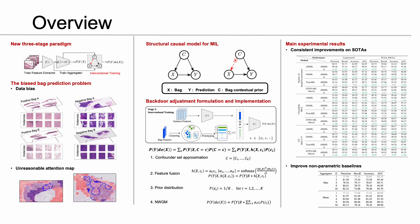Here is a quick review. We present a new three-stage paradigm for multi-instance learning. We try to solve the biased bag-prediction problem. It can be caused by the dataset bias, for example, the co-occurrence of color patterns and labels. It can also be caused by unreasonable attention maps. From the causal lens, the actual reason is that the confounder opens the backdoor path. Thus, we solve the problem by the backdoor adjustment formulation. As a result, our method brings consistent improvements to all state-of-the-art, and it can also empower non-parametric baselines.